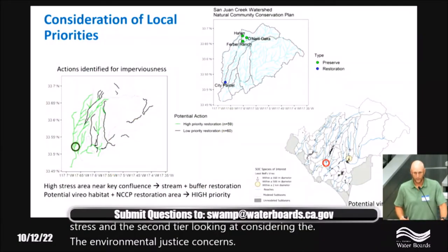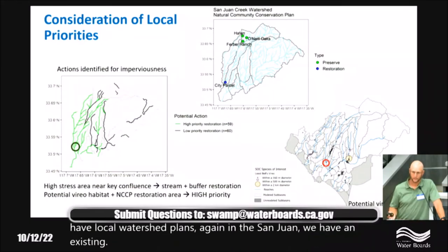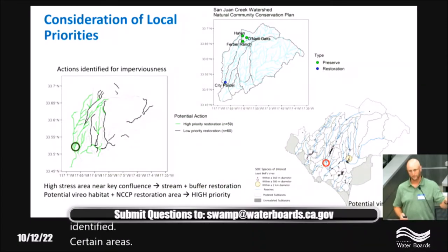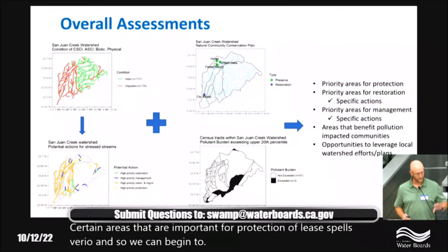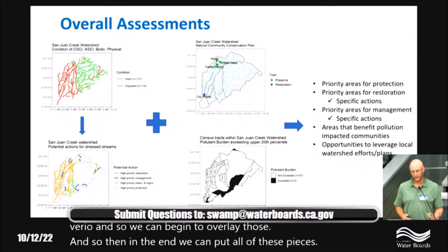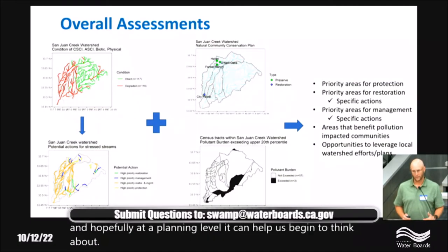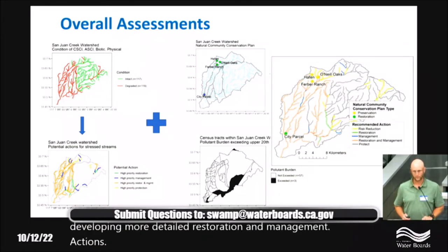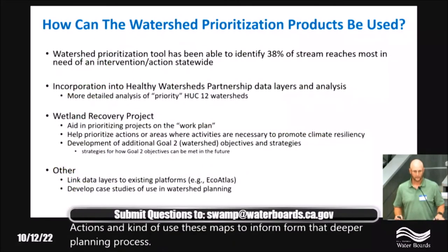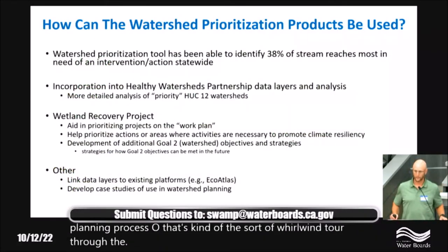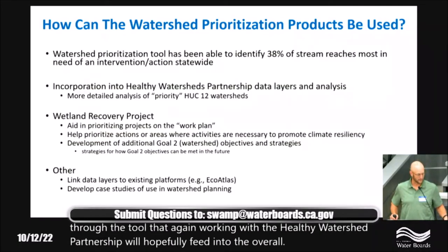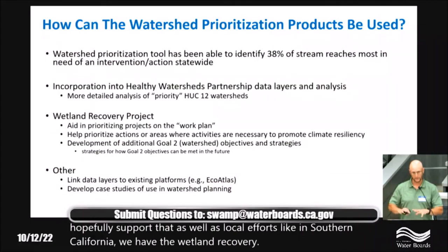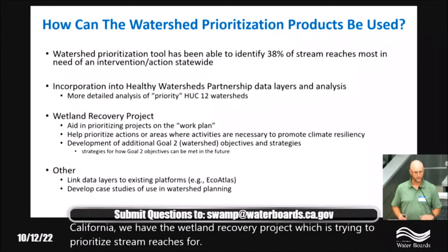In the San Juan watershed, we also have an existing NCCP — Natural Communities Conservation Plan for Sensitive and Endangered Species — that has identified areas important for protection of species like the least Bell's vireo. We can overlay those. Putting all the pieces together, at a planning level this can help us think about where to protect, where to reduce risk, where to investigate for more detailed restoration and management actions, and use these maps to inform that deeper planning process.